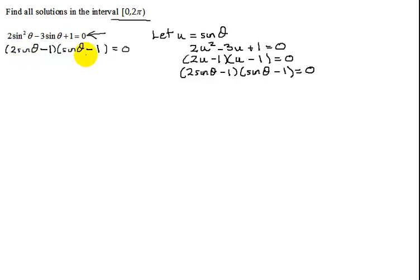Now once you've factored it, two things multiply together equaling 0, you're going to set each of them equal to 0. So 2sinθ - 1 = 0 or sinθ - 1 = 0.